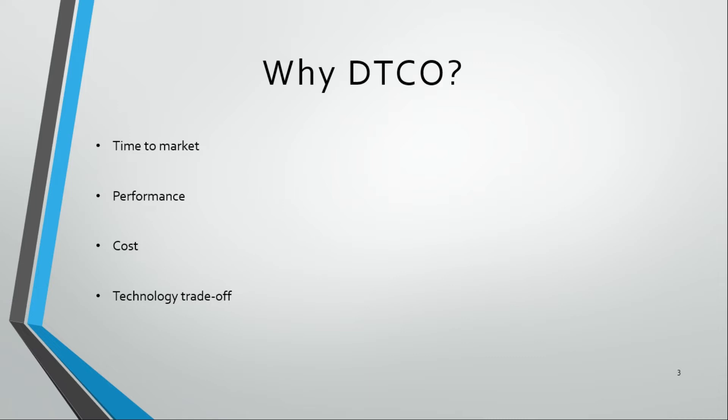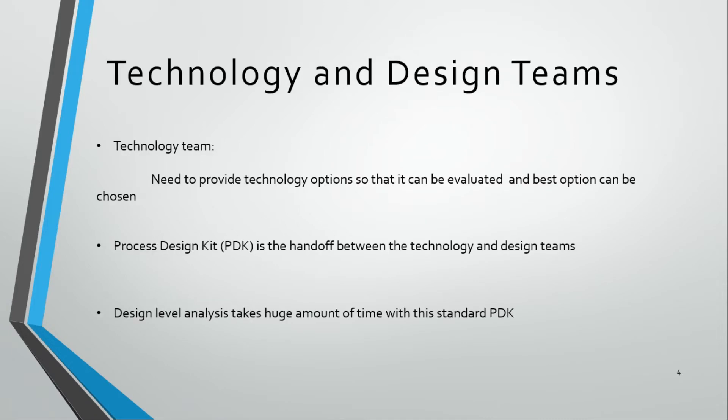If we don't include DTCO properly, we may not be able to tune a particular design with respect to a particular process — for example, we may not be able to tune it for performance. Cost also becomes a problem because we may miss our schedule. There are also technology trade-offs such as performance, power, and many other factors. Because of design rule changes, we may have to trade off between them.